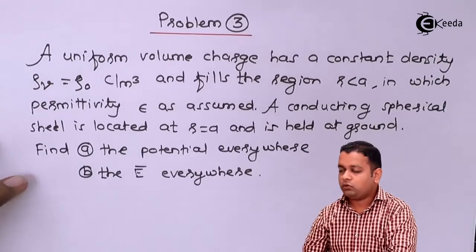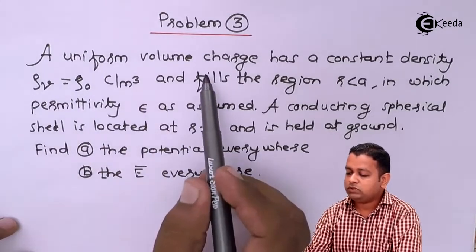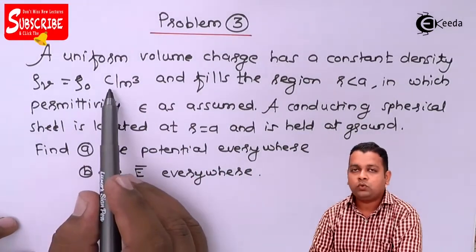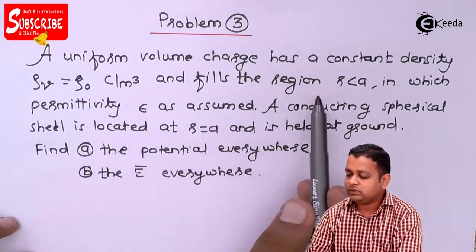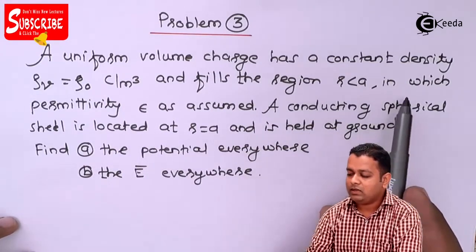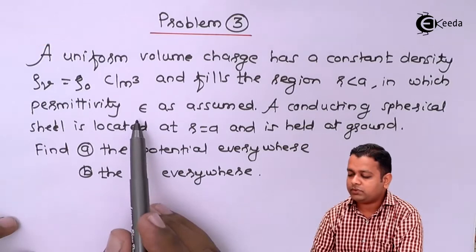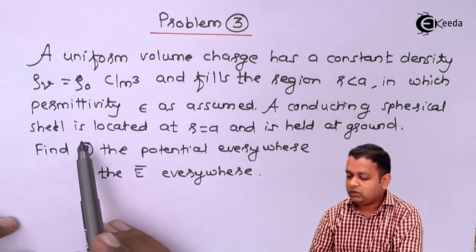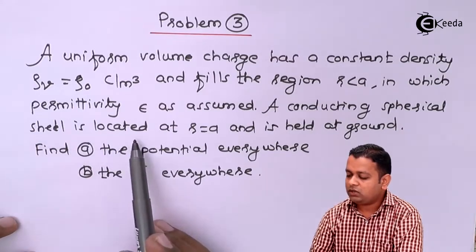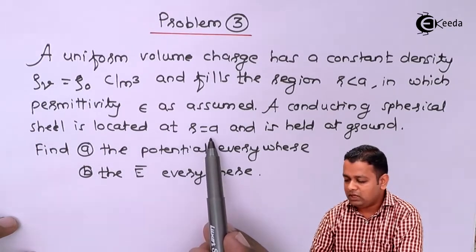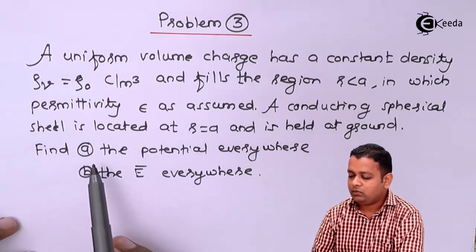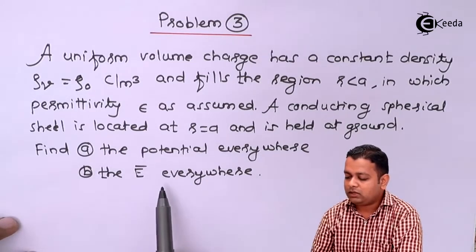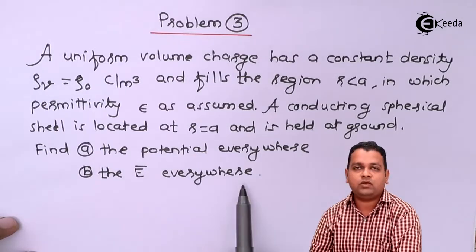Here we have the problem statement. A uniform volume charge has a constant density, rho_V equal to rho_0 Coulombs per meter cube, and fills the region R less than A, in which a permittivity epsilon is assumed. A conducting spherical shell is located at R equal to A and is held at ground. We have two parts: the potential everywhere, and in part B, the electric field intensity E everywhere.